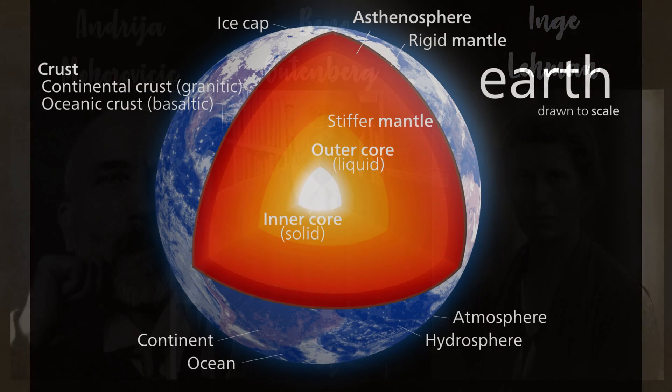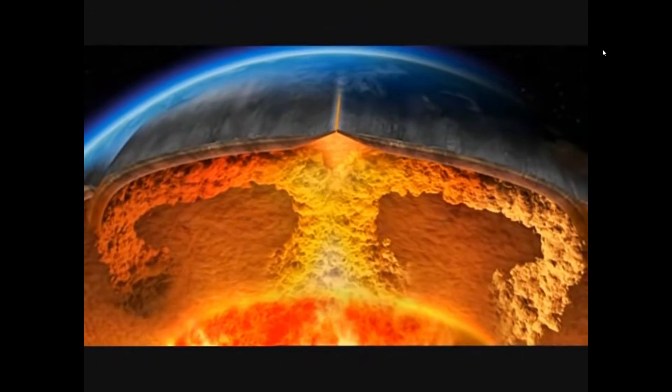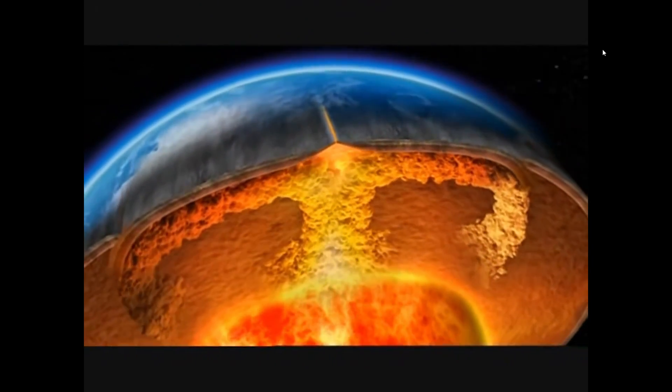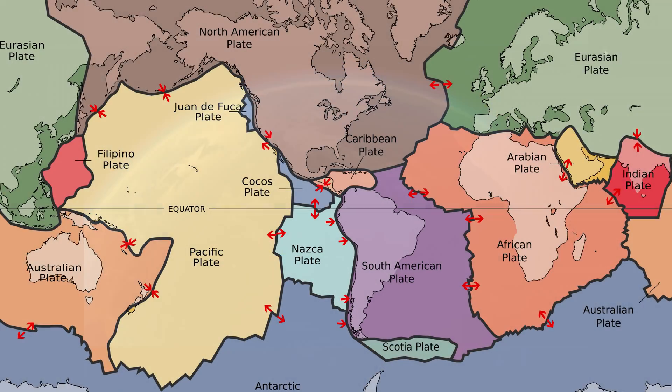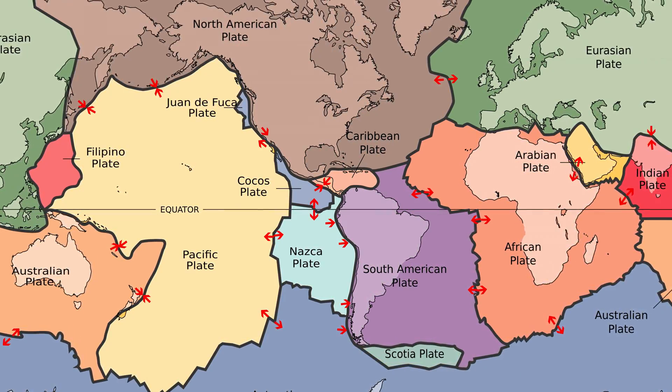It was not until the 1960s when other geologists were able to explain continental drift by understanding the internal movements of the Earth. Thus, plate tectonics was born, and Wegener was able to regain his place in the history of geology.